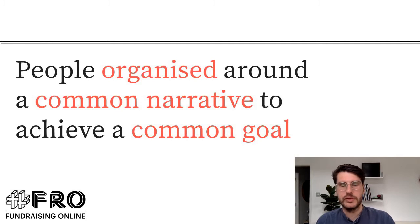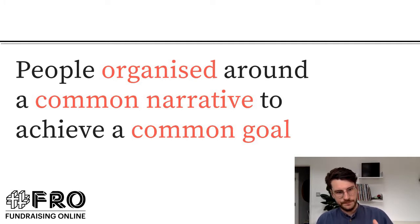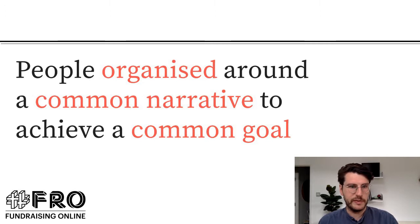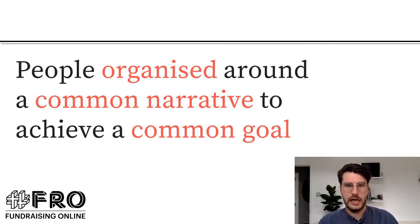So, movements. What do we mean when we talk about a movement? It's a word that gets used a lot without a lot of clarity, so this is my attempt at a definition. A movement is people organised around a common narrative to achieve a common goal. Let's look at those three key features one by one. Every movement has typically a common goal — something that the movement is trying to change, whether that's a policy or a law, behaviour change in society, or changing a set of attitudes.